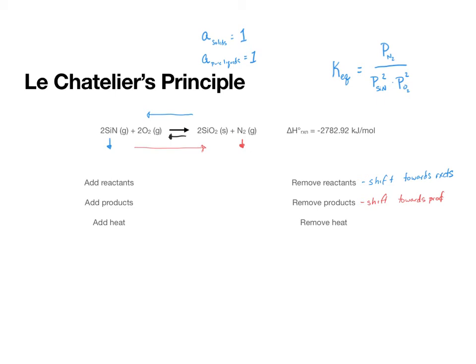Then, with heat, if we remove heat, that is the same as removing a product. And so, we are going to shift towards products. So, that means that if we do this reaction in an ice bath, that we will get more products from this reaction.